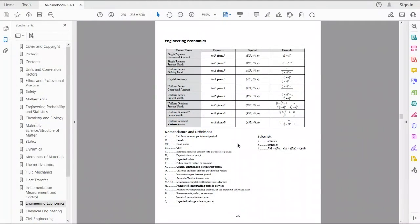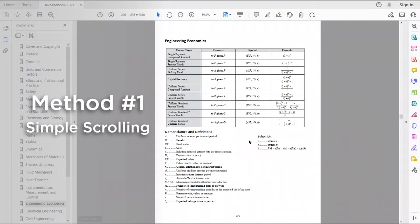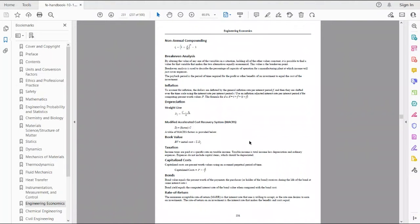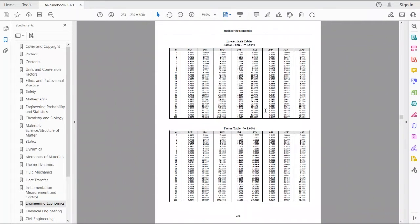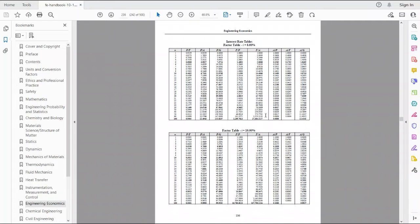So I have the NCEES FE Reference Handbook opened over here. Method number one, which is probably the most intuitive method that we use for navigating PDFs all the time, is simple scrolling. I'm at engineering economics right now, and if I know exactly what I need, like the formula to convert a non-annual compounding interest rate into an effective annual interest rate, or if I need to jump to the MACRS factors or interest rate tables, I can keep navigating within engineering economics.